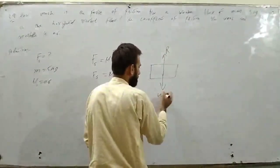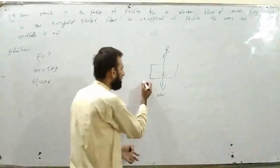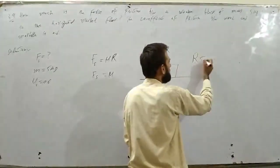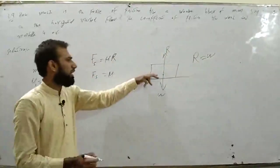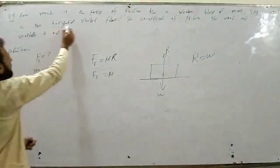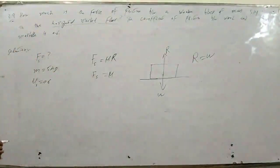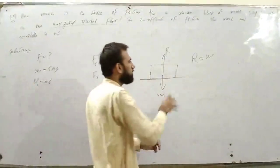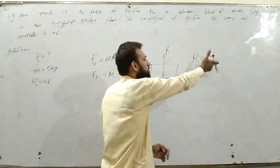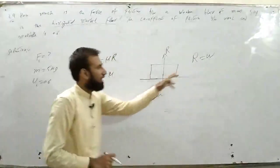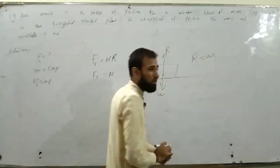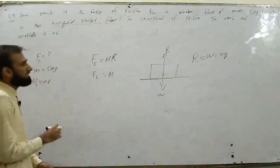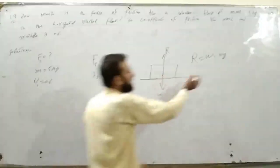अगर कोई object horizontal surface पे पड़ा हो तो उस वक्त W equal होता है R के - R is equal to W। जब object horizontal surface पे पड़ा हो तो horizontal marble floor पे object पड़ा है। Normal reaction force जो है यह weight force के equal है - R is equal to W।